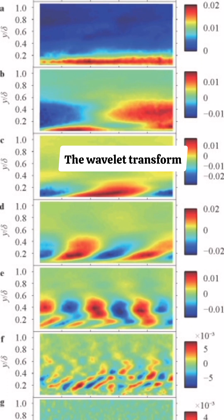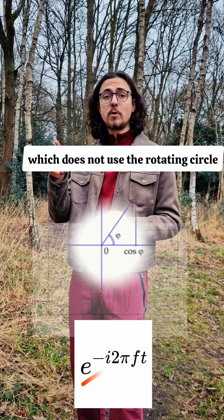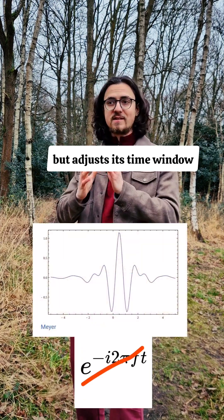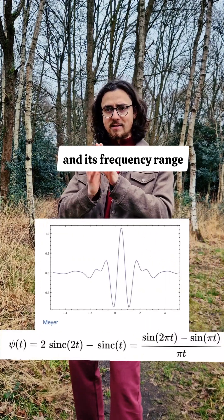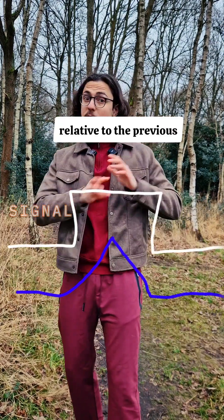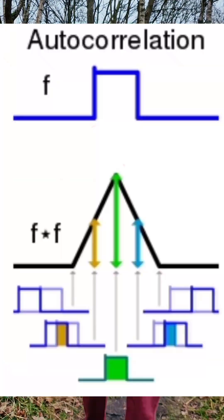As well as the wavelet transform, which does not use the rotating circle, but adjusts its time window and its frequency range relative to the previous time point in the signal using autocorrelation.